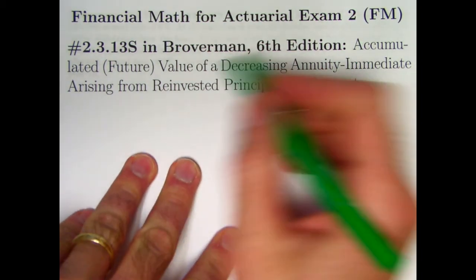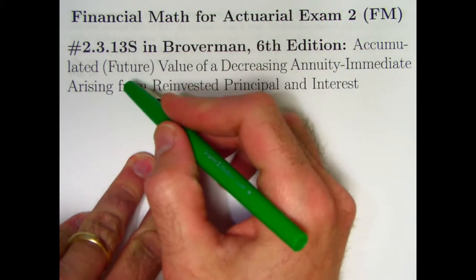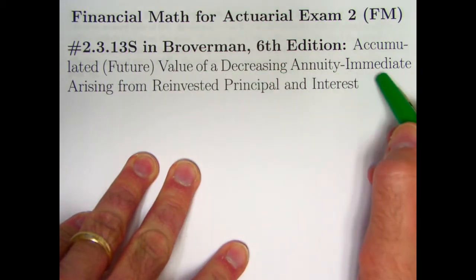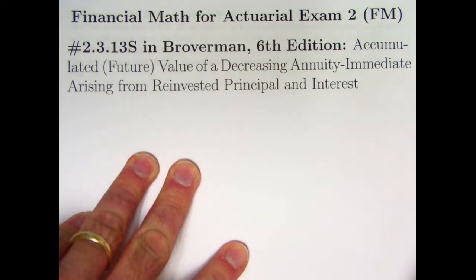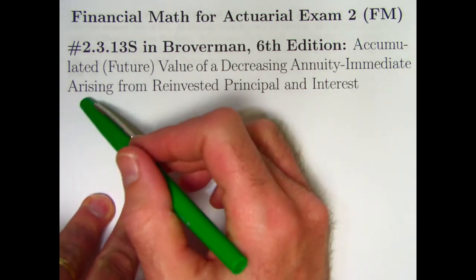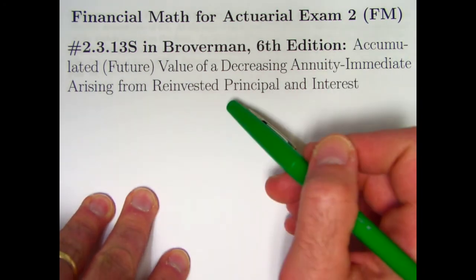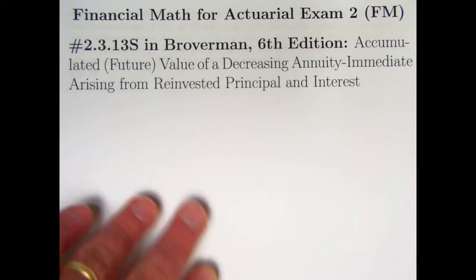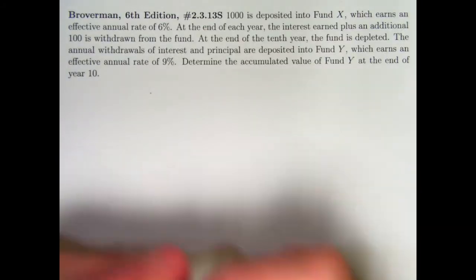In this video we're going to calculate the accumulated or future value of a decreasing annuity immediate. Recently we've been looking at increasing annuities immediate. This time, arising from reinvested principal and interest, we will also develop the general formulas for the future and present values of a decreasing annuity immediate of the simplest kind.